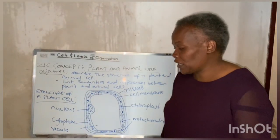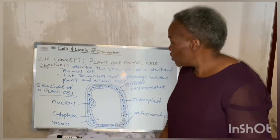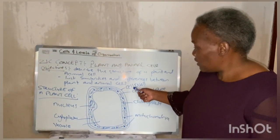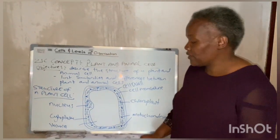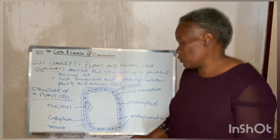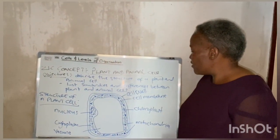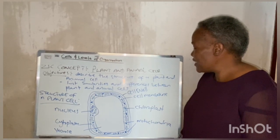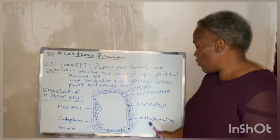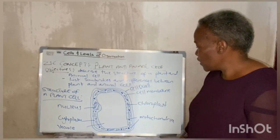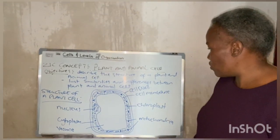It's much easier for you to construct a table with two columns — on one end you write the component or feature, and on the other side you write the function. Let's start with the cell wall. The cell wall is a rough and rigid, non-living outer layer on plant cells, made up of a carbohydrate called cellulose.